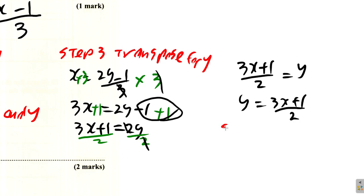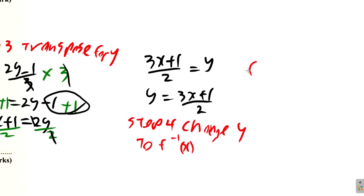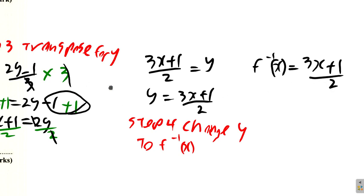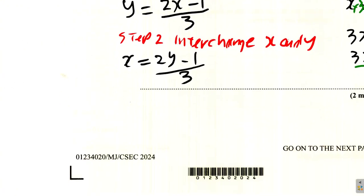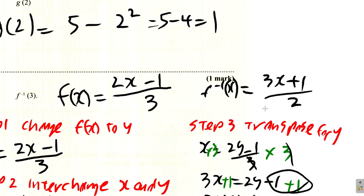Step 4: change y to what it really is — f inverse of x. So f⁻¹(x) = (3x + 1)/2. That is the inverse function.